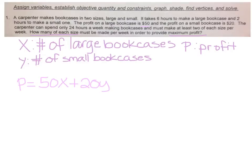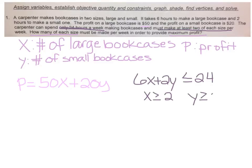All right, we need constraints. So let's read this problem again. It takes six hours to make a large bookcase and two hours to make a small one. 6x plus 2y, but he is constrained because he can only spend 24 hours a week. So we can do less than or equal to 24. We are also constrained to the fact that we must make at least two of each size. So x has to be greater than or equal to 2, and y has to be greater than or equal to 2. That is not one equation. That's two separate lines, two separate inequalities, at least two of each size. So we have three constraints to graph.